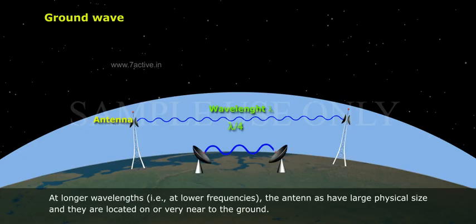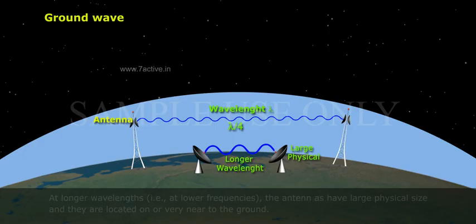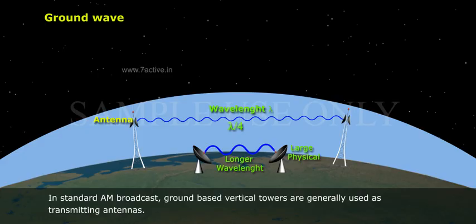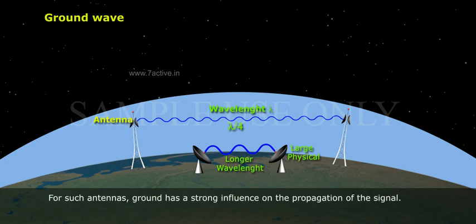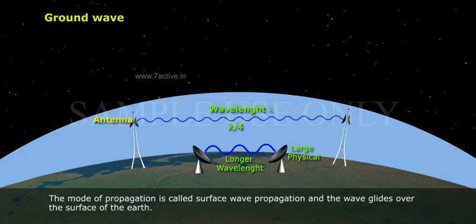At longer wavelengths (that is, at lower frequencies), the antennas have large physical size and they are located on or very near to the ground. In standard AM broadcast, ground-based vertical towers are generally used as transmitting antennas. For such antennas, ground has a strong influence on the propagation of the signal. The mode of propagation is called surface wave propagation and the wave glides over the surface of the Earth.